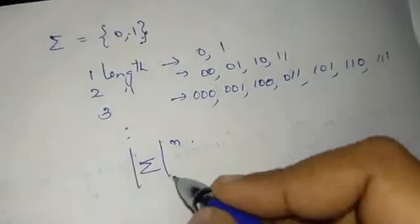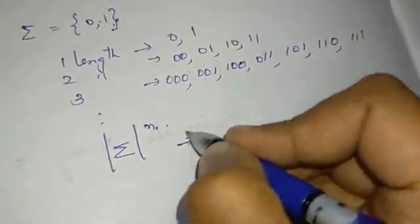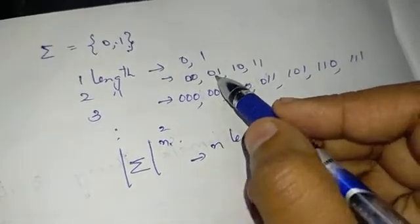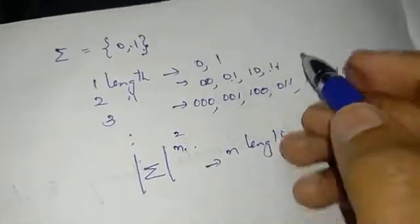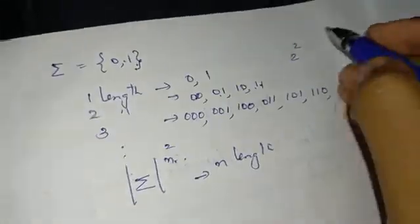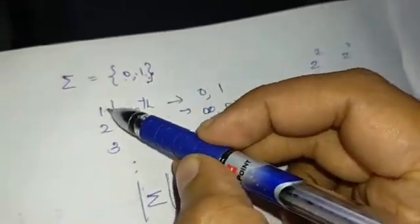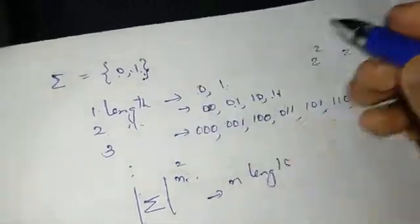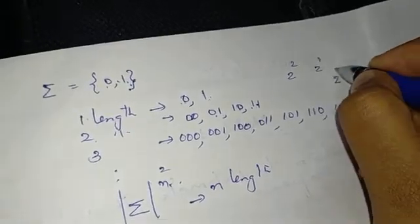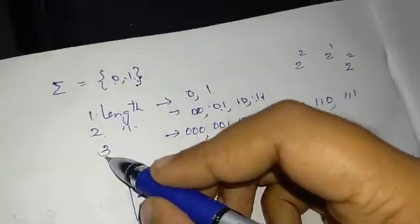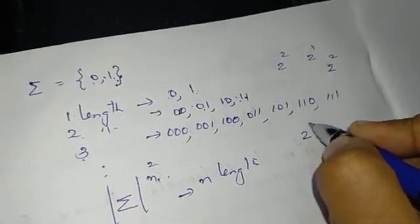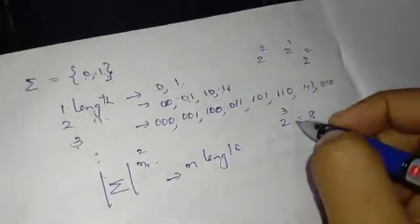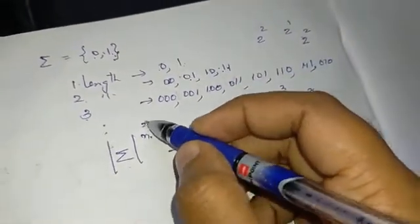If you generalize the same thing, we will generalize it as an n-length string. Suppose if I have a 2-length string, I will generate 1, 2, 3, 4 strings — that is 2 raised to 2 equals 4. For 1-length, it is 2 raised to 1 equals 2. For 3-length, we generate 8 strings — that is 2 raised to 3. Then we generalize as sigma raised to n.